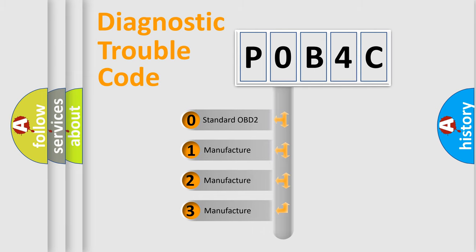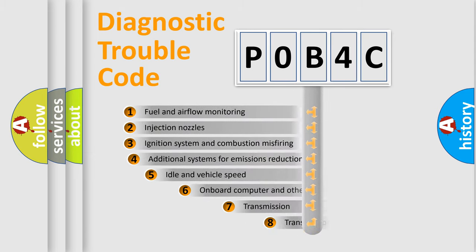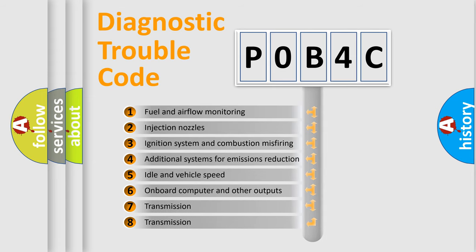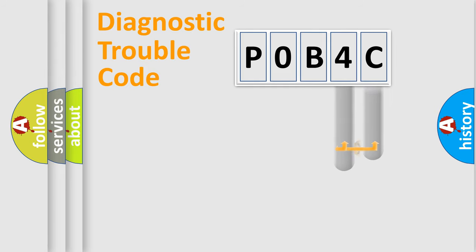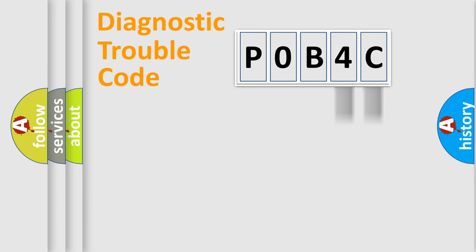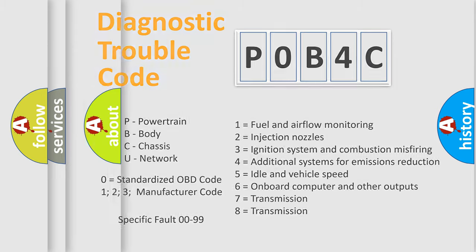If the second character is expressed as zero, it is a standardized error. In the case of numbers 1, 2, or 3, it is a more specific expression of a car-specific error. The third character specifies a subset of errors. This division is valid only for the standardized DTC code, and only the last two characters define the specific fault of the group. Such a division is valid only if the second character code is expressed by the number zero.